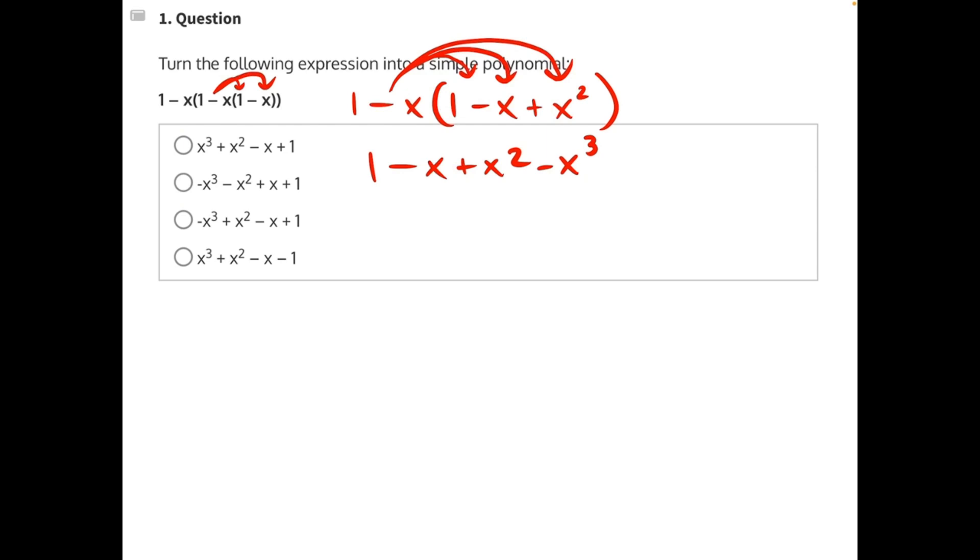There are no more like terms to combine, so now we must rearrange all of our terms in descending order of powers, starting with negative x to the third because that is the highest power that we have. Negative x to the third. If we take a look at our answer choices, this eliminates the first and last option.